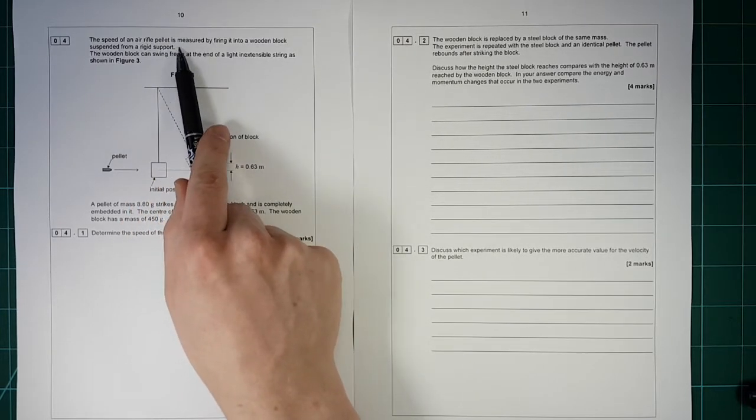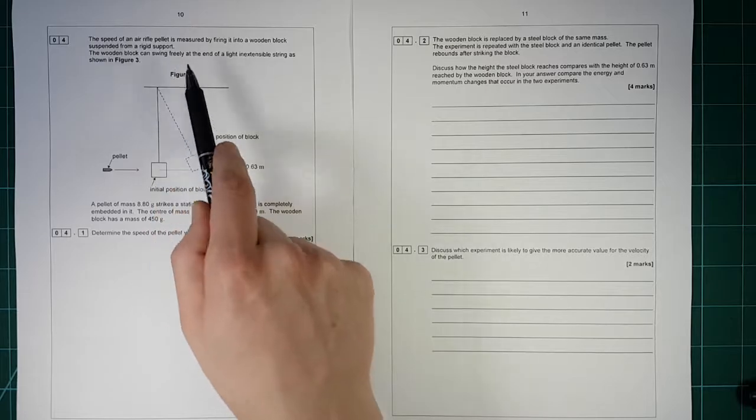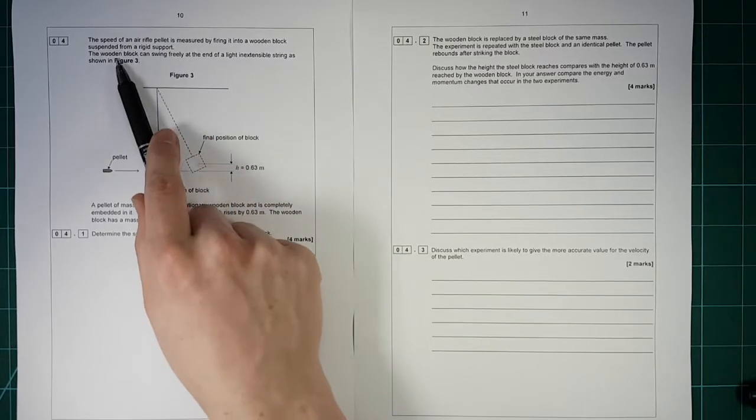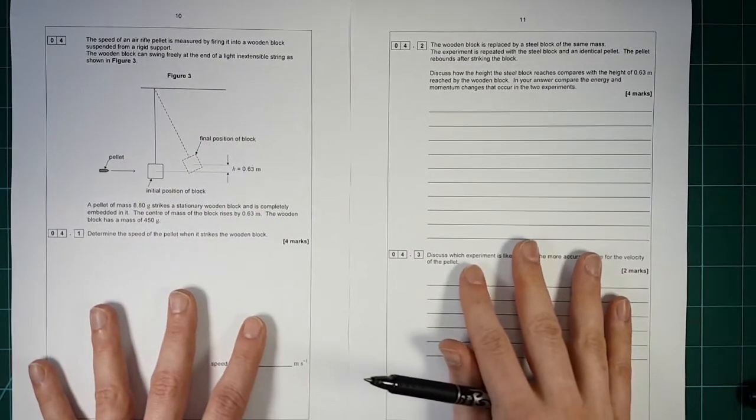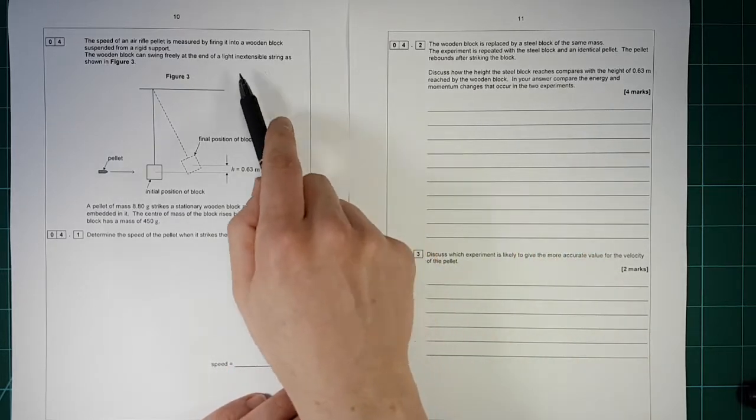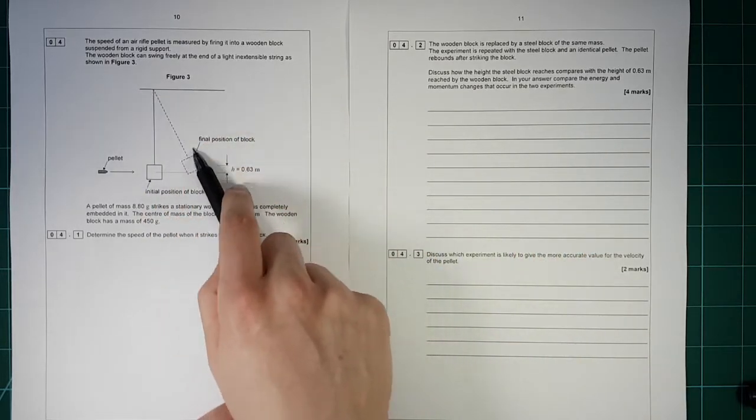The speed of an air rifle pellet is measured by firing into a wooden block suspended from a rigid support here. The wooden block can swing freely at the end of a light and extensible string. So there we go, the block moves up to there.